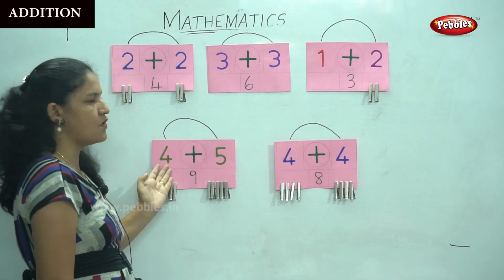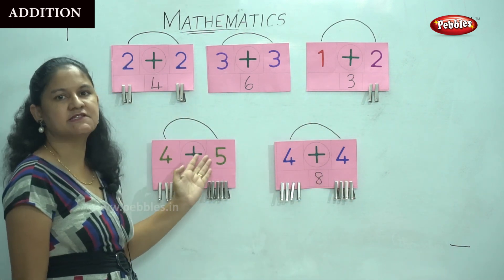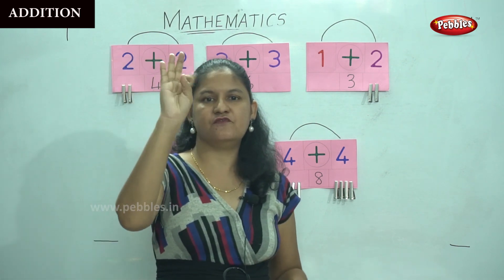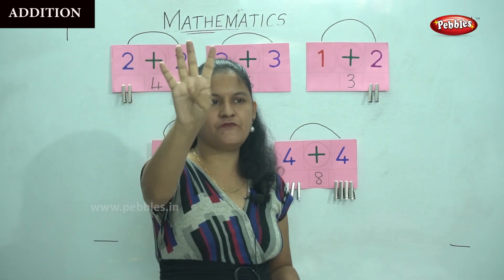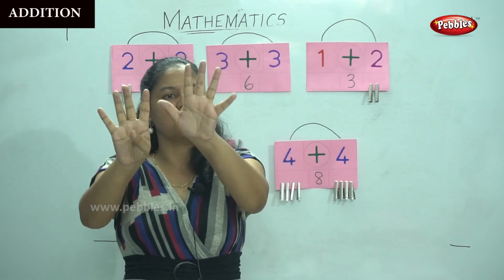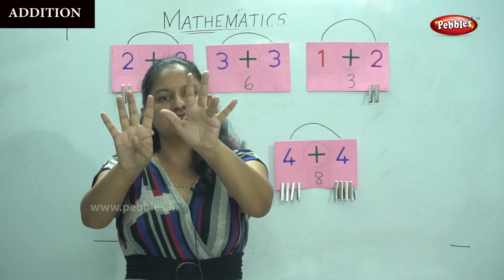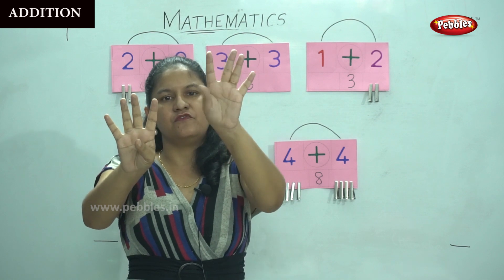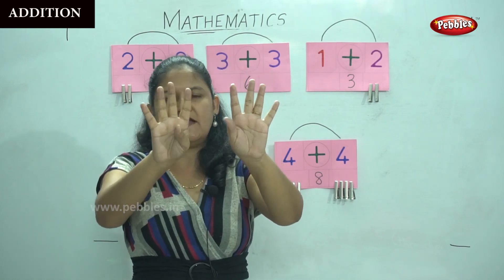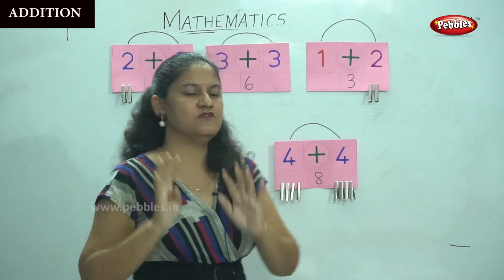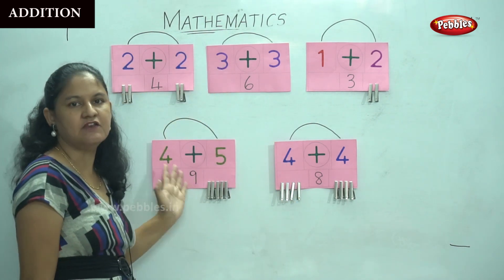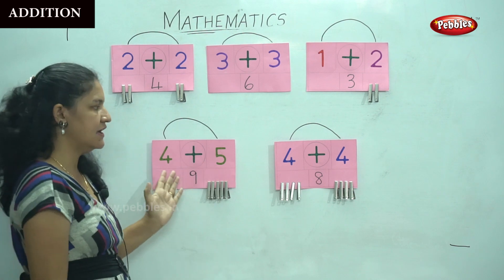The next is four plus five. I will take four fingers and five fingers. When we add up: one, two, three, four, five, six, seven, eight, nine — that gives me nine fingers. The answer is nine. Four plus five gives me nine.